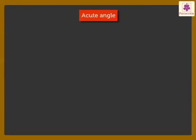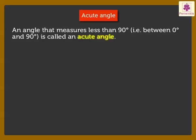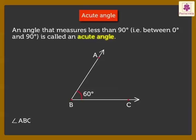Acute Angle: An angle that measures less than 90 degrees, that is, between 0 degrees and 90 degrees, is called an acute angle. Look at the figure. Here, angle ABC measures 60 degrees. So, angle ABC is an acute angle.